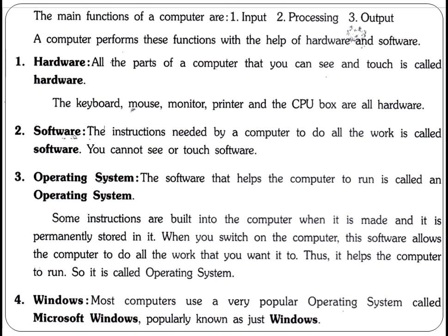A computer performs these functions with the help of hardware and software. Input, processing, and output — these three functions work when your computer has proper hardware and software fully installed. All the parts of a computer that you can see and touch are called hardware — for example, the keyboard, mouse, monitor, printer, and the CPU box are all hardware.